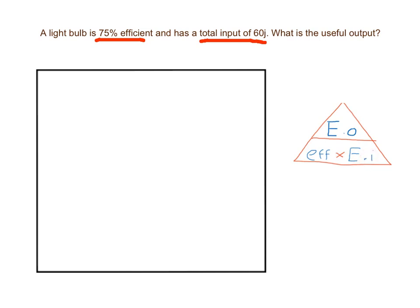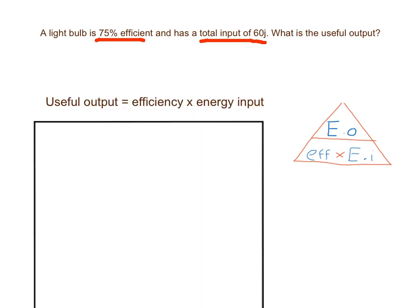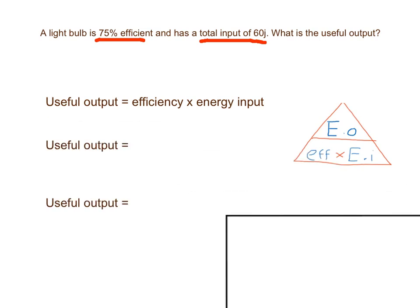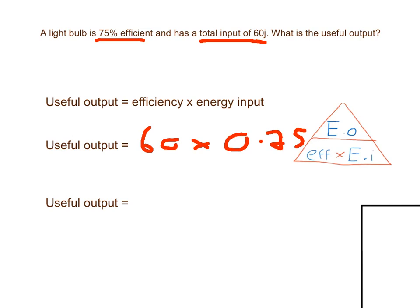So the first step I would recommend is writing down that exact formula. So, the first thing we have here is the useful output equals efficiency times energy input. Now, once we know the formula, we can start to input some numbers. So we know the useful output in this case is 60 joules. And we know the efficiency is 75%. So to turn that into a decimal, we divide by 100, 75 divided by 100 would give us 0.75. So 60 times 0.75 will be what our useful output actually is. So if you multiply 60 by 0.75, that actually gives us 45.